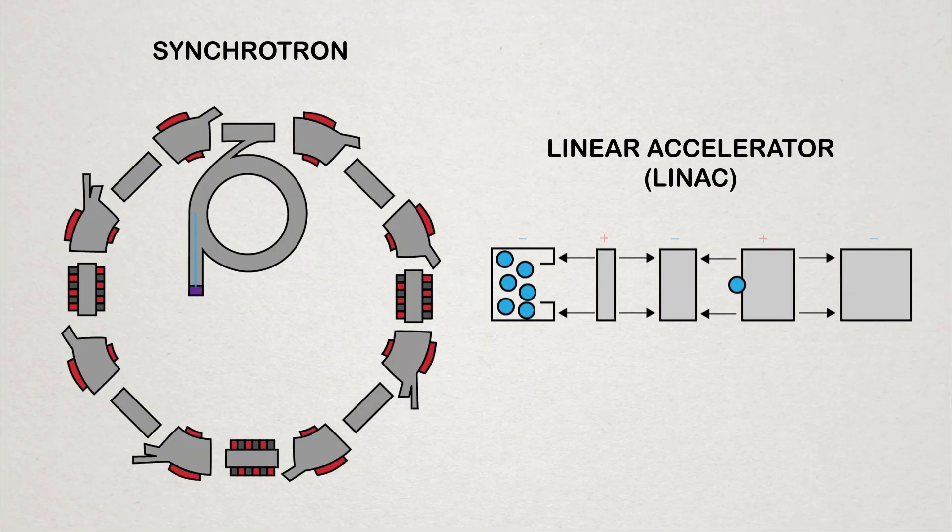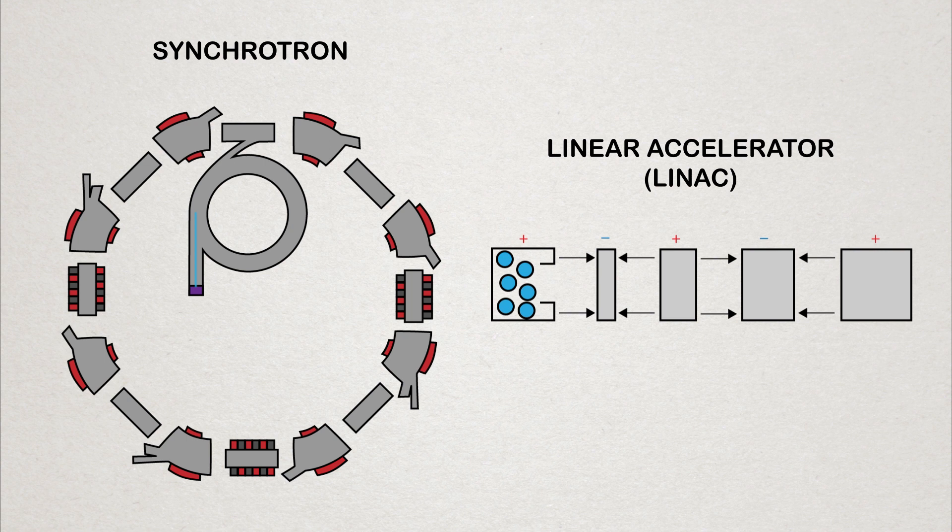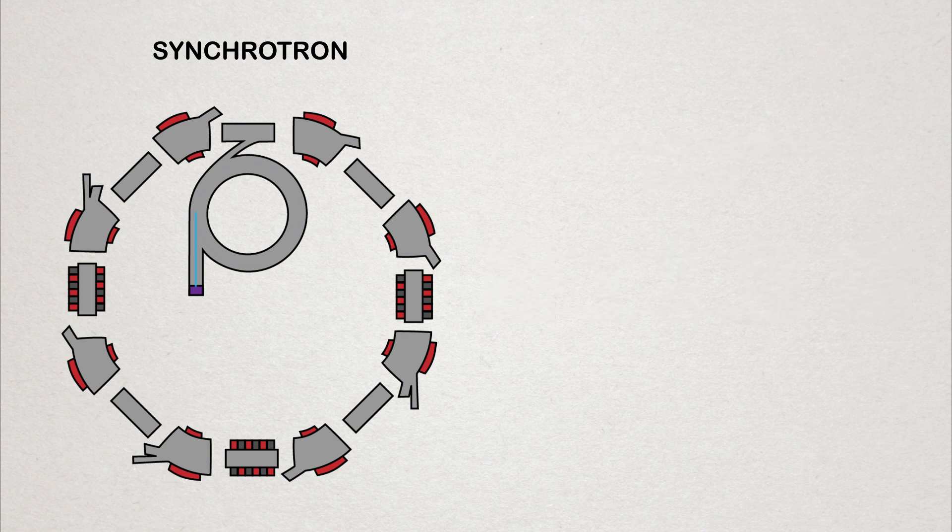The electrons then go into a booster ring, where they are split up even further before being injected into the storage ring. This is where all the magic happens.